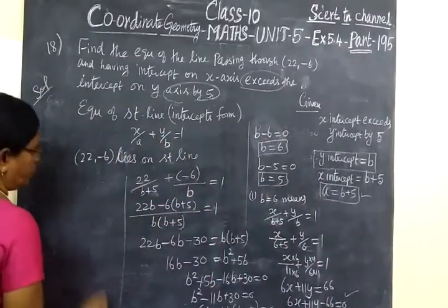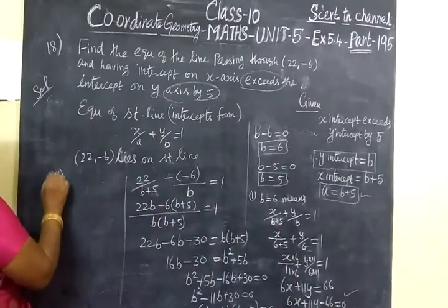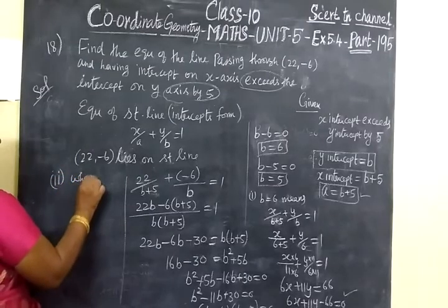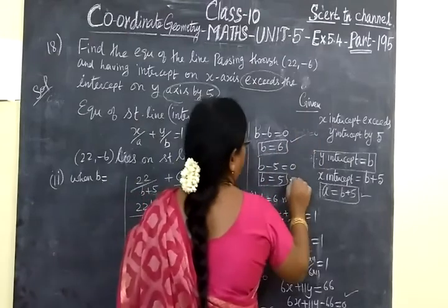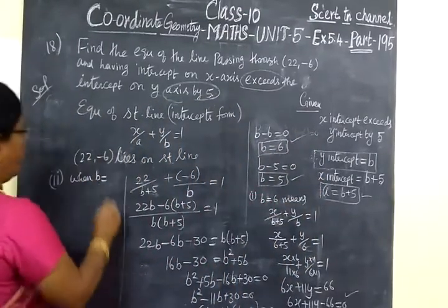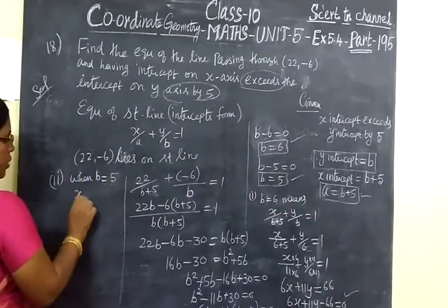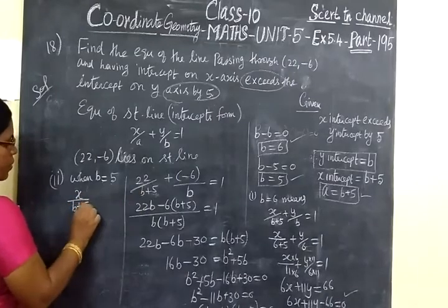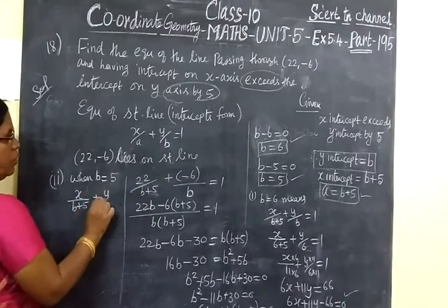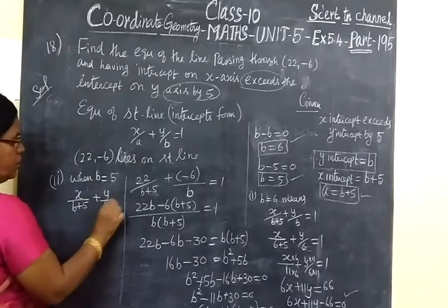Another set of answers: when B equals 5, we write x/(B+5) plus y/B equals 1. With B equals 5, this becomes x/(5+5) plus y/5 equals 1.